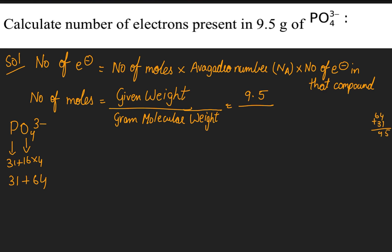So the gram molecular weight is 95. We should substitute this gram molecular weight in the above formula. Number of electrons equals 9.5 divided by 95 times Avogadro's number times electrons in PO₄³⁻.